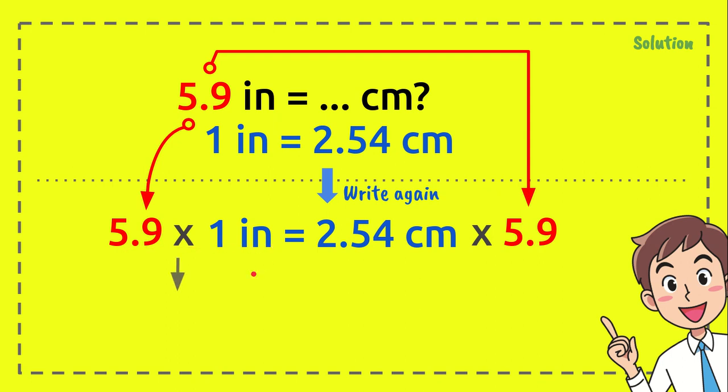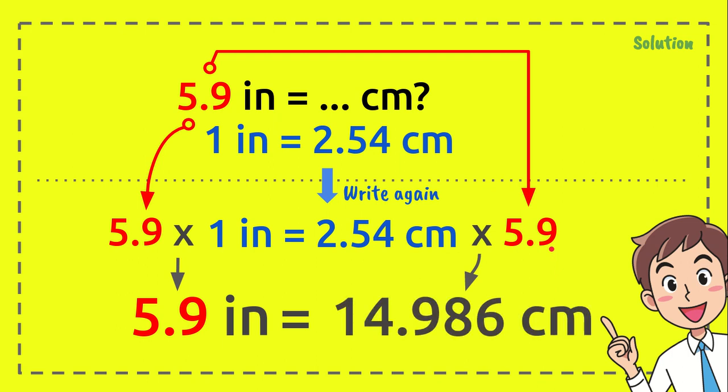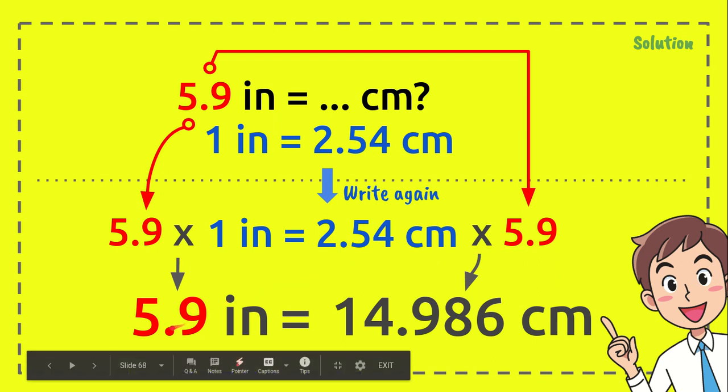...equals 5.9 inches, and 2.54 centimeters times 5.9 equals 14.986 centimeters. So 5.9 inches equals 14.986 centimeters.